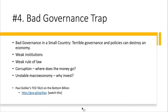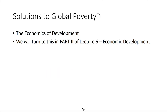Here is a link to Collier's TED Talk — I'd recommend you watch it absolutely, and I'd recommend buying the book 'The Bottom Billion.' It's super informative. Solutions to global poverty is where we'll turn to next in the second part of Lecture 6.